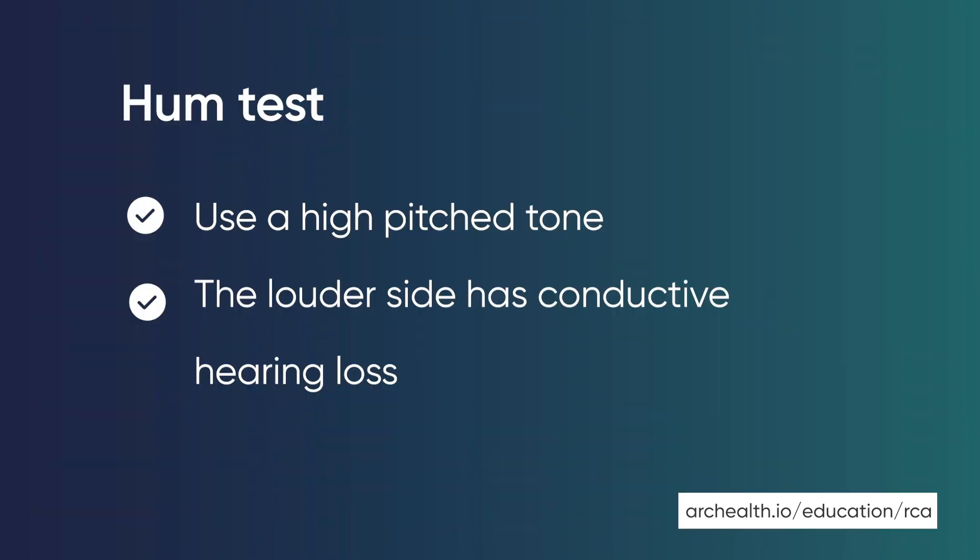Patients presenting with ear symptoms may be difficult to manage when you can't look into the ear. But you can use the hum test, where you ask the patient to hum a high-pitched tone and tell you which side was louder. This can identify conductive hearing loss, such as that created by otitis media with effusion, in the louder ear.